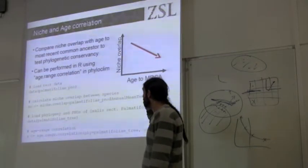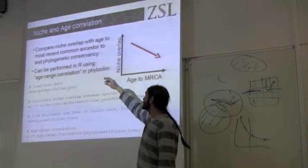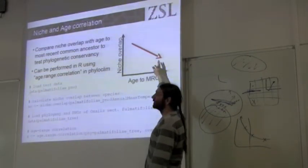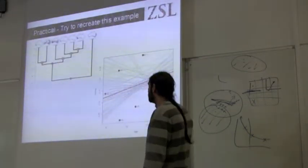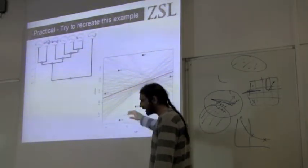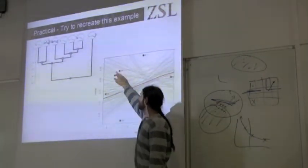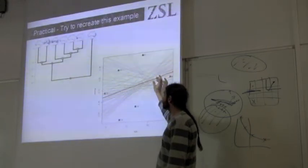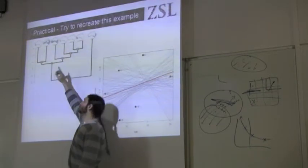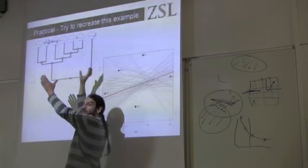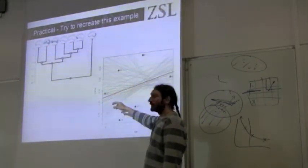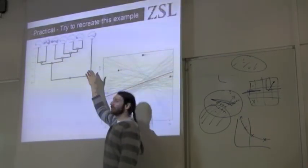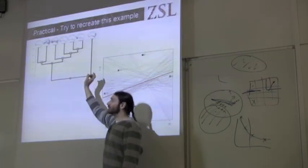We can do this sort of graph in Filoclone. The age-range correlation is something unique to the Filoclone package — we essentially do this plot and look at the slope. This is an example we're going to do in the practical. We plot our points, do a simple regression line, but there's a statistical test where we randomize the niches across the phylogeny. For each randomization, we have a permutation of where the niches fit on the phylogeny, then redraw the line.